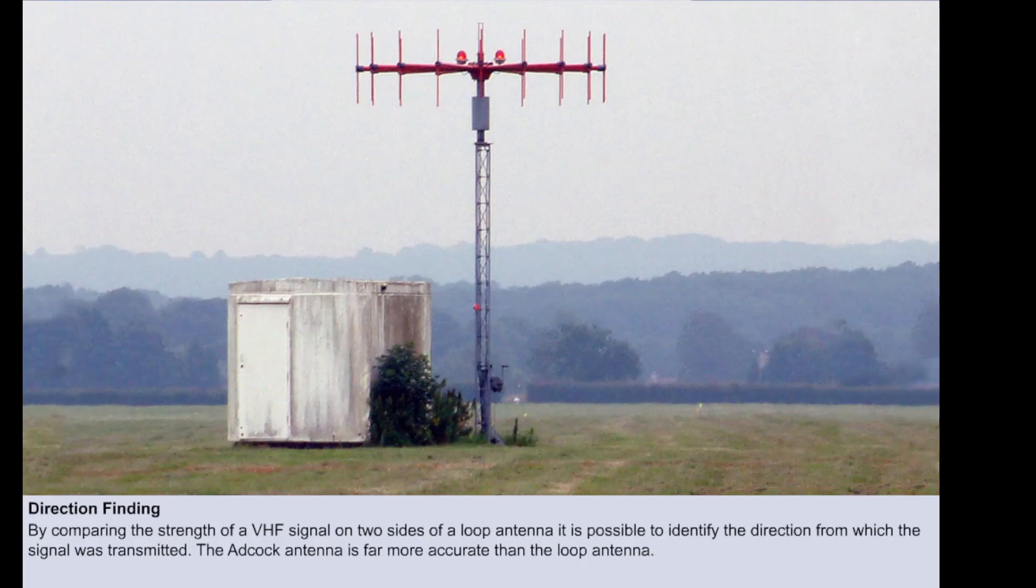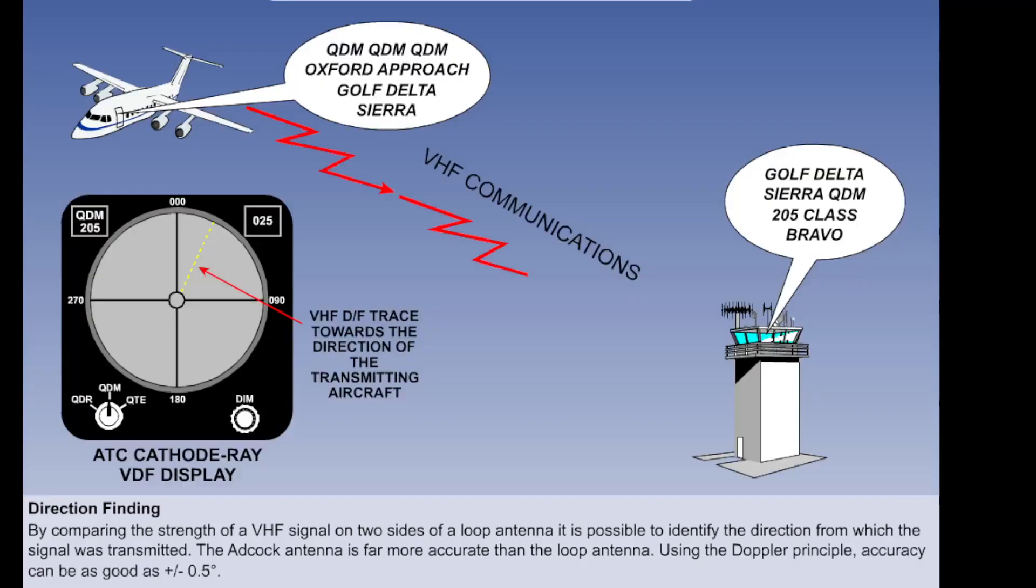The equipment used is now far more sophisticated than the old loop antenna and the antenna used is called an ADCOC antenna. This has four or more vertical elements, vertically polarized. Here we have an array of elements which are arranged in a circle. The bearing obtained using the Doppler principle is displayed either on a cathode ray tube or as a digital readout. Accuracy can be as good as plus or minus half a degree.